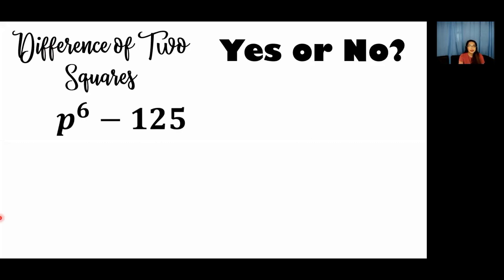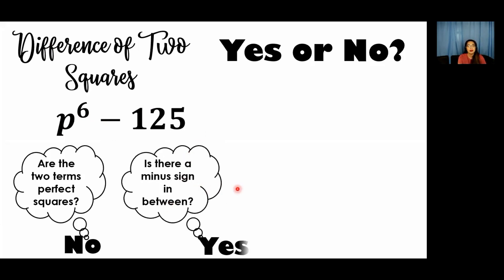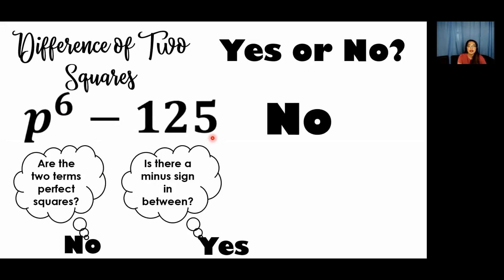Next example: p to the 6th power minus 125. First condition — are the two terms perfect squares? p to the 6th power — yes, it has a square root. But how about 125? Does it have a square root? The answer is no — 125 is not a perfect square. So even though there is a minus sign in between satisfying the second condition, since one of the terms is not a perfect square, p to the 6th minus 125 is not a difference of two squares.